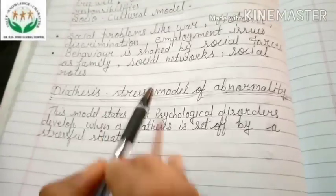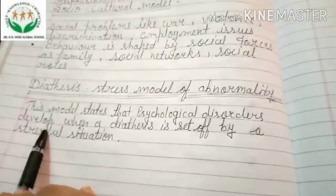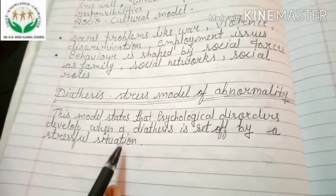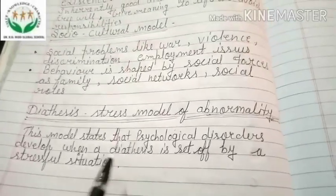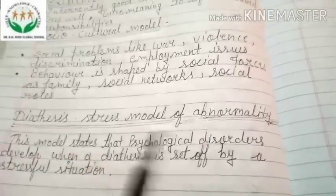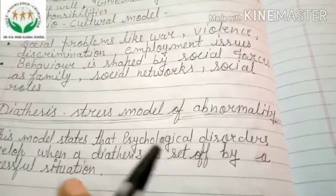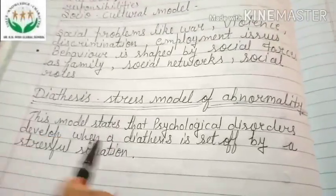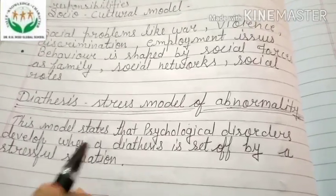The last model is the Diathesis Stress Model of Abnormality. This model states that psychological disorders develop when our diathesis is triggered by a stressful situation. It tries to explain how biology and environment work together on people's minds. According to this model, people are born with a certain biological or genetic predisposition to a mental illness, and if you face significant stress or anxiety, you will start to develop psychological disorders.